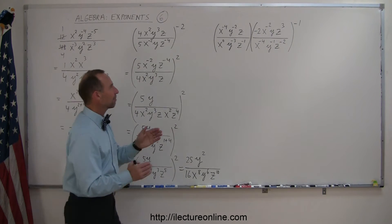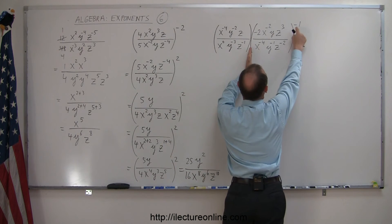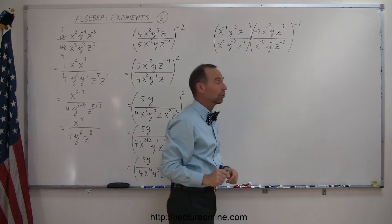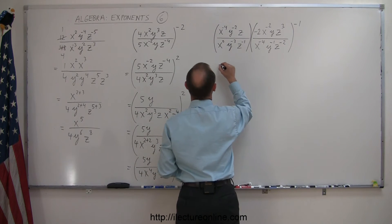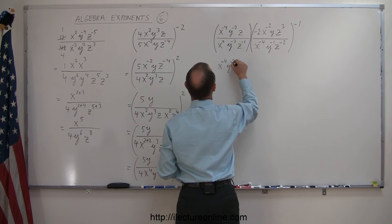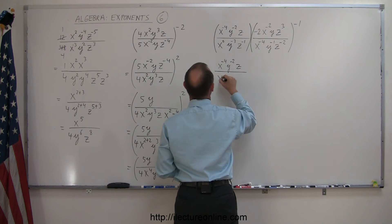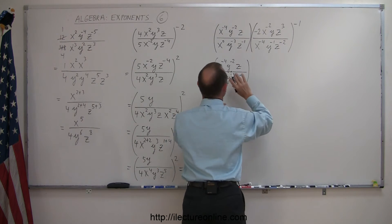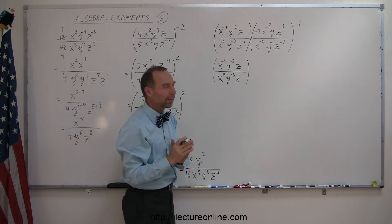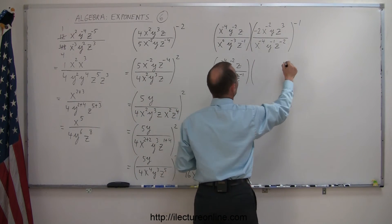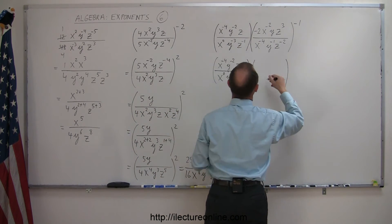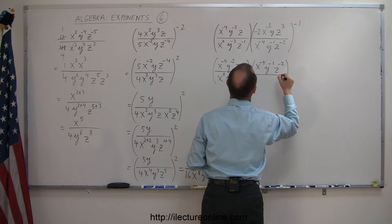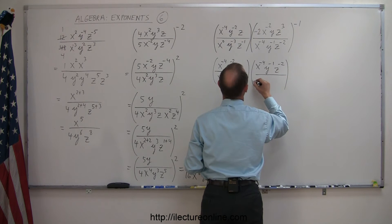Now look at this. We have something in parentheses multiplied by this, and notice this is raised to a negative exponent. I'm going to turn that into a positive exponent and flip the fraction around. When I do that, I get x⁻⁴, y⁻², z divided by x⁰, y⁻³, z⁻¹. I like to do one step at a time to make sure I don't make mistakes. Then I'm going to flip this whole thing around, so this becomes x⁻⁴, y⁻¹, z⁻² all divided by minus 2, times x⁻², y, z³.